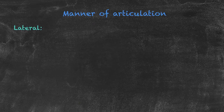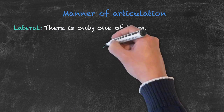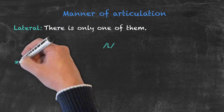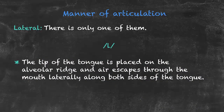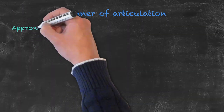Continuing on with the manner of articulation, we have our lateral sound. There's only one of them — I like to think of it as our lonely lateral sound. It's the L sound. It's called lateral because the tip of the tongue is placed on the alveolar ridge and air escapes through the mouth laterally, along both sides of the tongue. If you try that at home you can get an appreciation of where the air is going — it's moving laterally along the vocal tract.